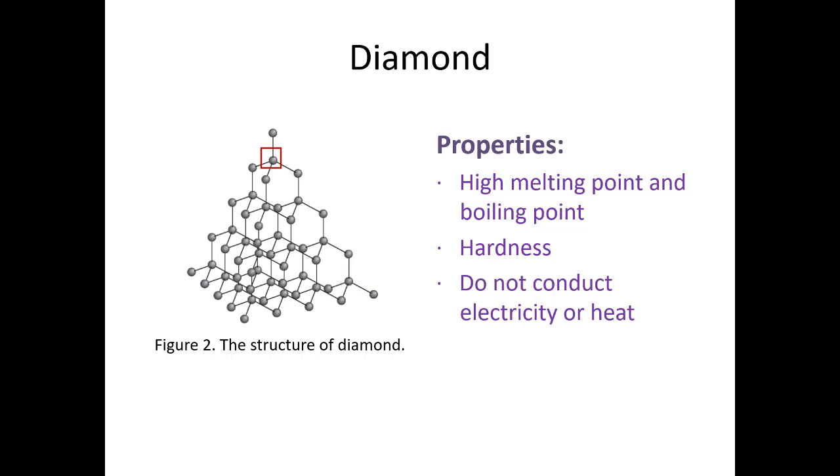Most of the diamonds used around the world have been mined from the earth's crust. However, artificial diamonds can be made by heating other forms of carbon under high pressure. Artificial diamonds are too small to be used for jewelry, but they can be used for drill tips. Except those elements, compound silicon oxide has giant molecular structure as well.